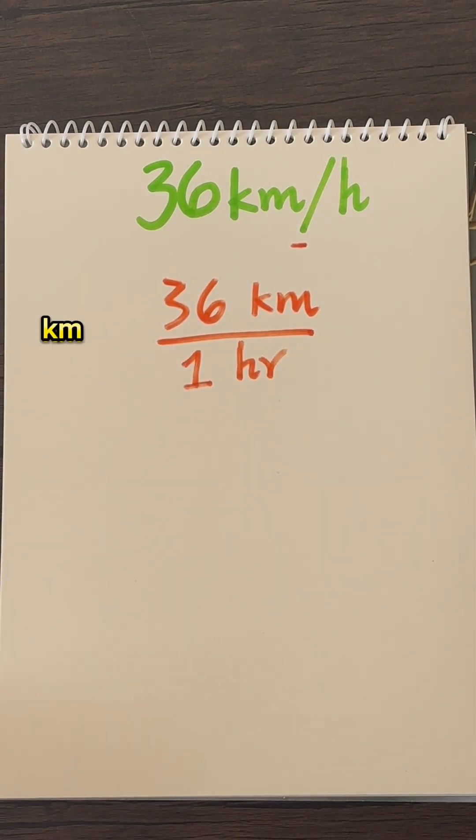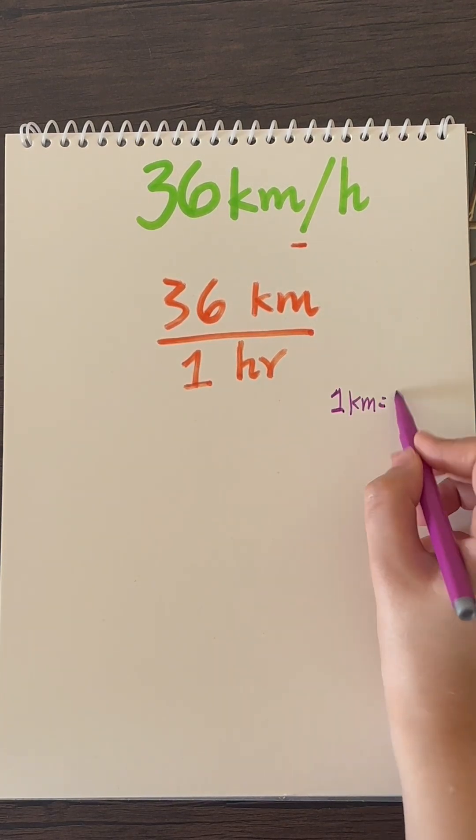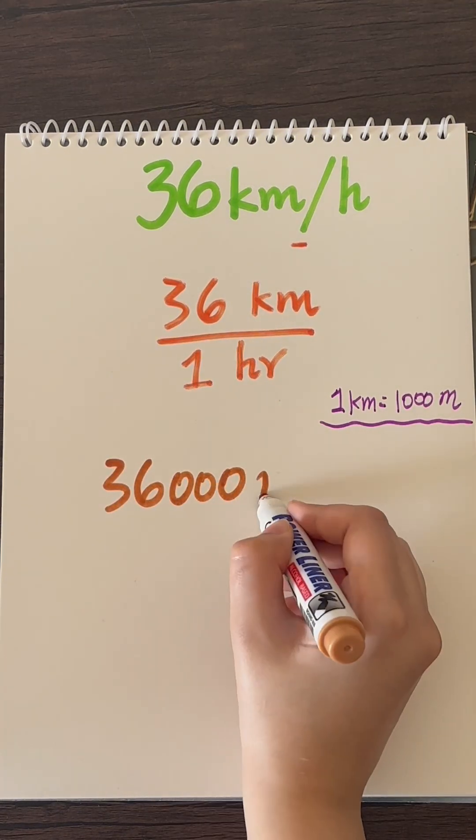So if you want to convert from kilometers to meters, all we need to say is how many meters are in a kilometer. One kilometer equals 1,000 meters, so 36 kilometers will be equal to 36,000 meters.